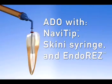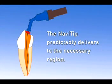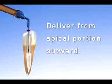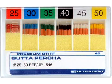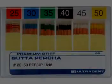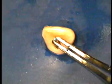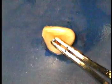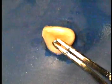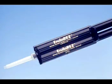Obturation was achieved using Navi tips, skinny syringes, and EndoRes. EndoRes is a urethane dimethacrylate resin-based material. It's hydrophilic, it's biocompatible, and it's very radio-opaque. We use this with a single gutta-percha point. The master gutta-percha point matching the last file used is fit. These are premium stiff gutta-percha, they will not noodle on the way down the canal.